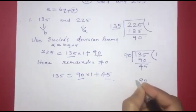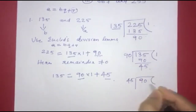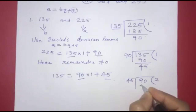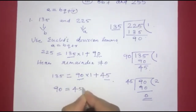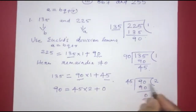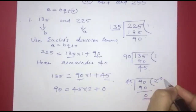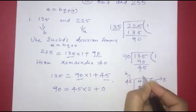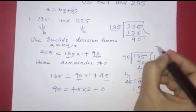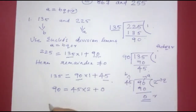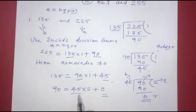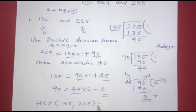The remainder 45 is not equal to zero. So we apply the lemma again: 90 is equal to divisor 45 into 2 plus remainder 0. The divisor at this step is 45.